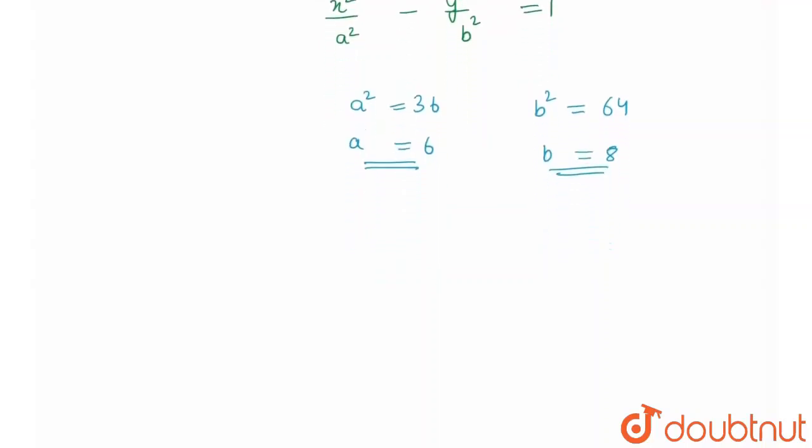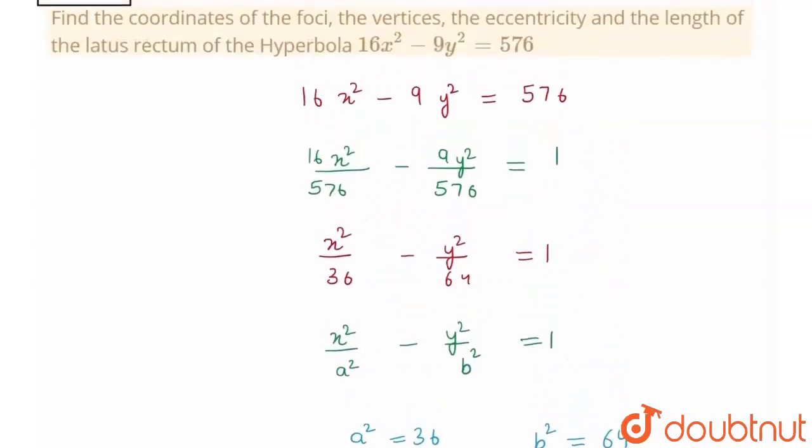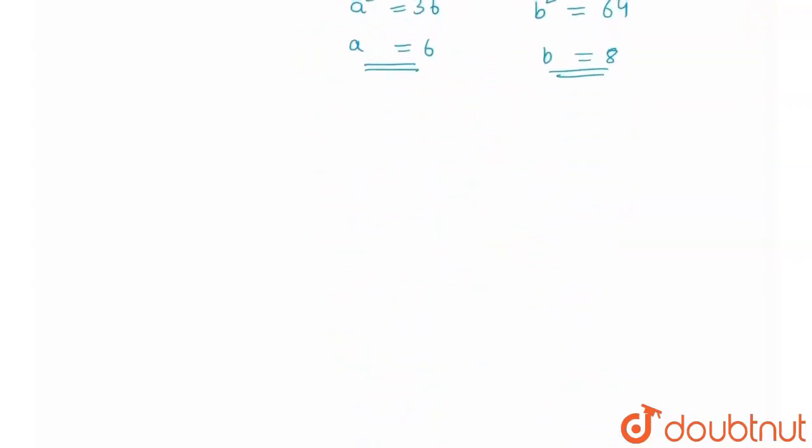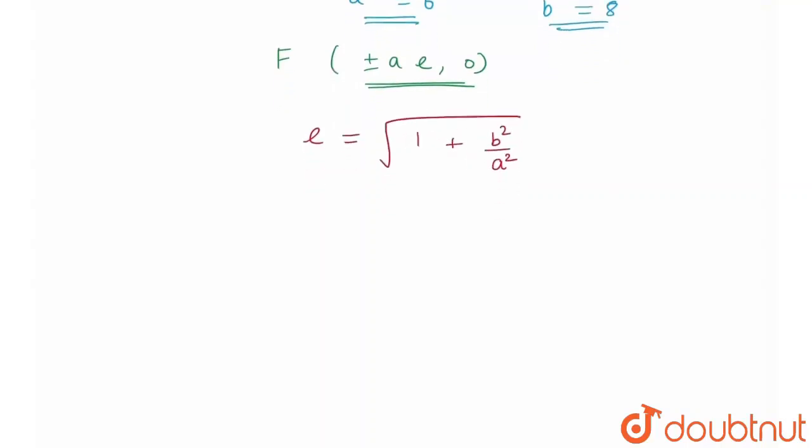Now I have the value of a and I have the value of b. Now what does the question say? The question says to find the coordinates of foci. So I know that the coordinates of foci would be equal to plus minus ae comma 0. Therefore, I need to find the eccentricity. So eccentricity would be equal to e is equal to under root of 1 plus b squared upon a squared. So e would be equal to under root of 1 plus b squared is 64, a squared is 36.